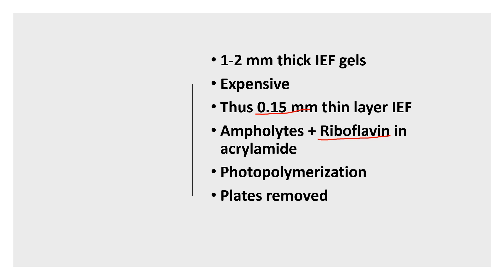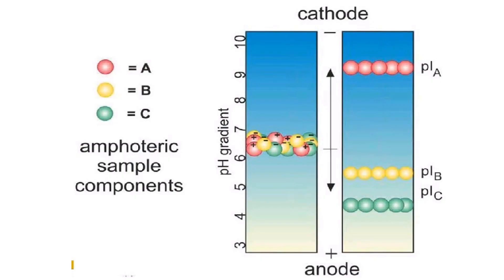This mixture was poured over glass plates which contained the spacer, and above this a second glass plate was placed to form the complete gel. Photopolymerization takes place when the gel is placed under bright light. Riboflavin decomposes to give free radicals which initiate the polymerization. This process takes around 2 to 3 hours, after which the glass plates are removed and the gel is stuck to one of the glass sheets.